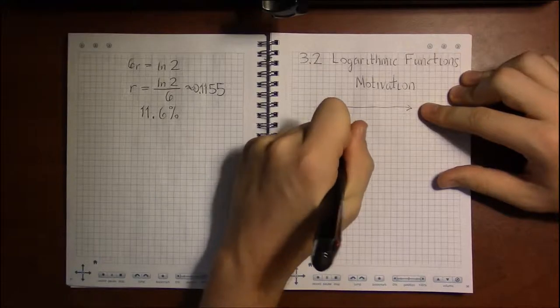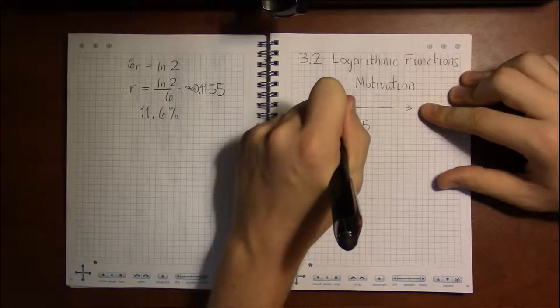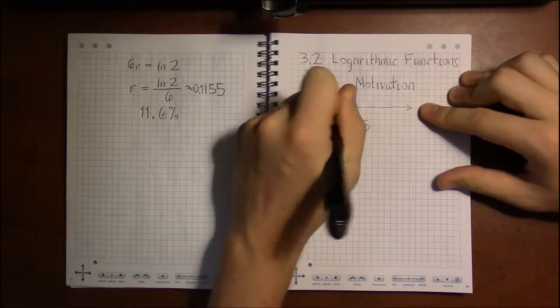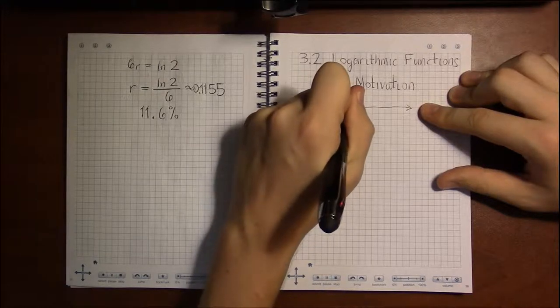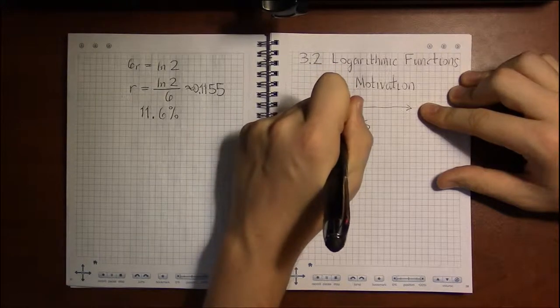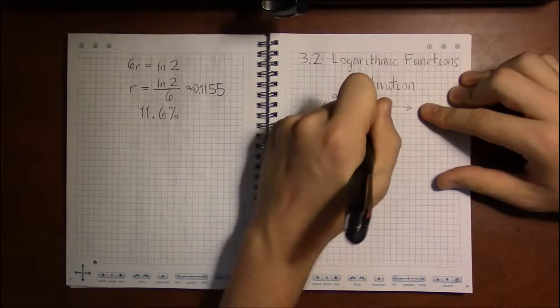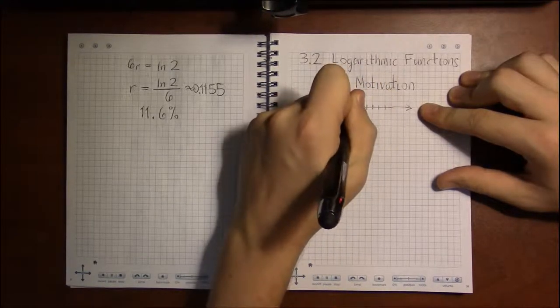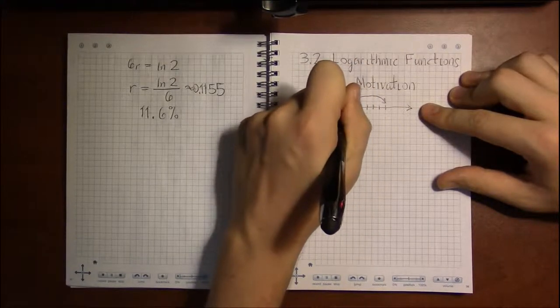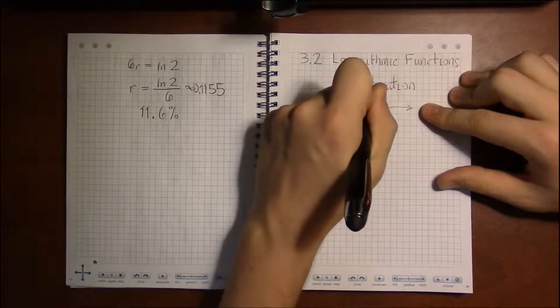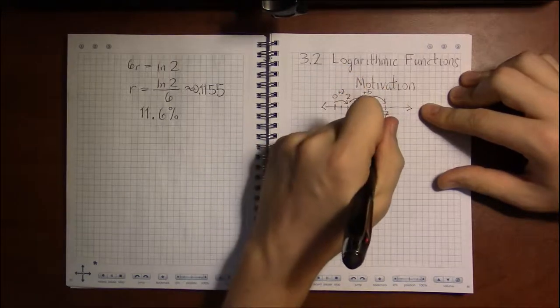For example, we could think of 2 plus 5 as starting at 0, moving 2 to the right, and then moving 5 to the right. And that this was a way to think about addition visually on the number line.